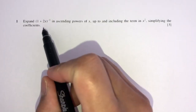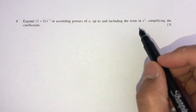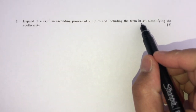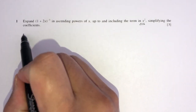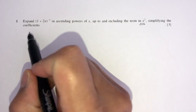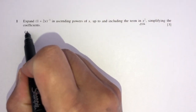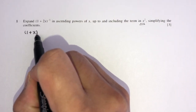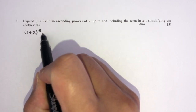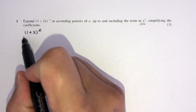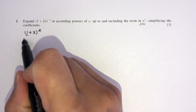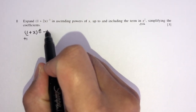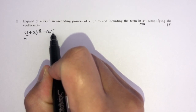In question number one, we have to expand this expression in ascending powers of x up to x squared. Let's see how we can do this. We know we have to use the formula, which is (1 + x)^n.